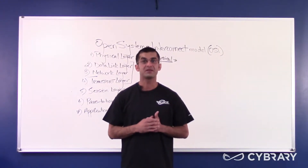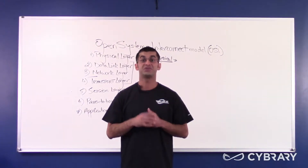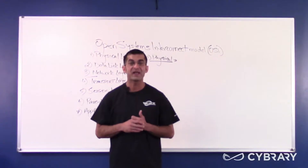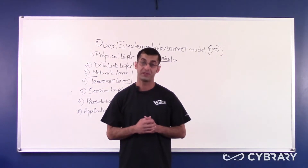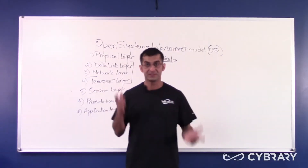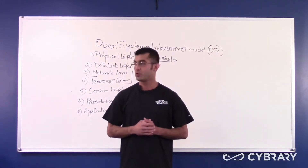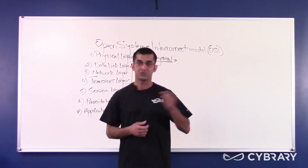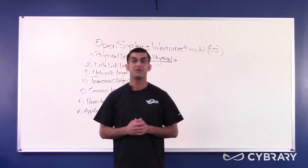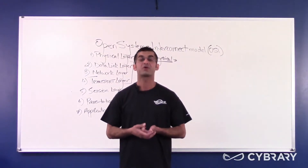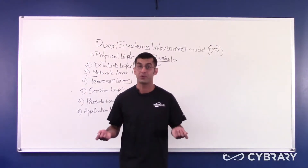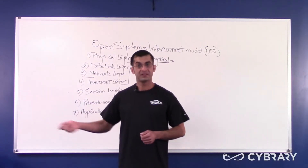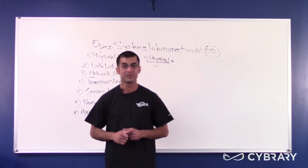XbaseT cabling comes in two flavors: straight-through or crossover. For the CCNA, remember that similar device types use a crossover cable, and unlike device types use a straight-through cable. A computer connecting to a switch uses straight-through; a router to a switch also uses straight-through. Two switches together use a crossover cable, two routers connected on Ethernet ports use a crossover cable, and a PC Ethernet to a router Ethernet also uses a crossover cable.